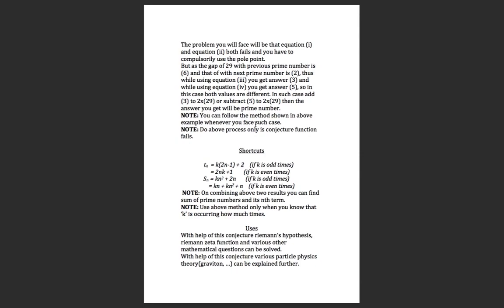You have seen this theory very well, but there are very interesting uses. This theory can prove Riemann's hypothesis and can be used in Riemann's zeta function and various other mathematical equations. Notably, the graviton is one use of this theory — the emission rate of graviton is based on prime numbers, meaning it follows the sequence of prime numbers. This particle is declared hypothetical because its existence is not yet proved, but if you know the sequence of prime numbers, you can find the emission rate.